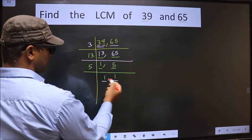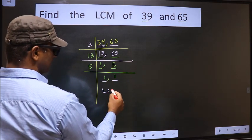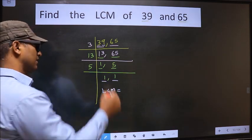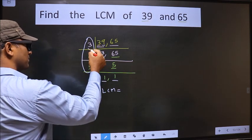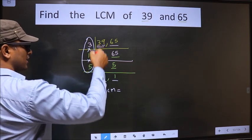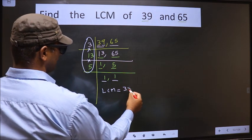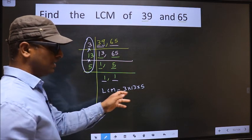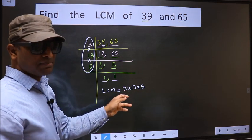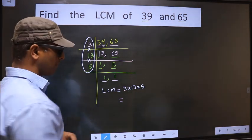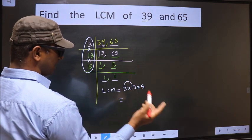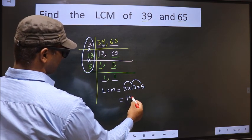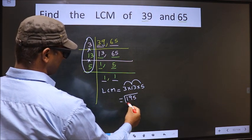We got 1 in both the places. So our LCM is the product of these numbers. That is 3 into 13 into 5. Now let us multiply these numbers. That is 3 into 13, 39 into 5. 195 is our LCM.